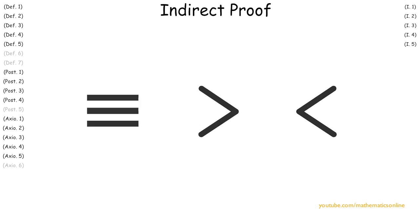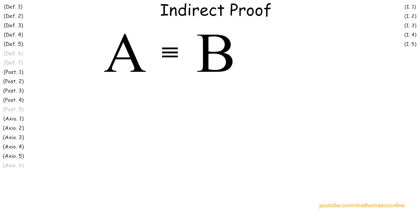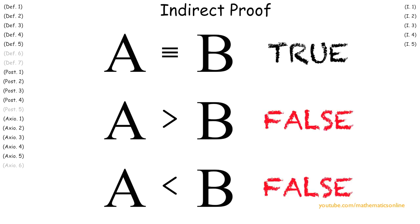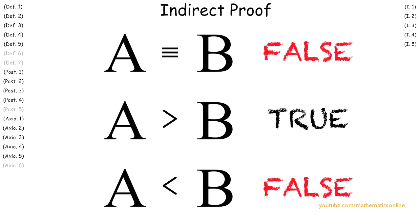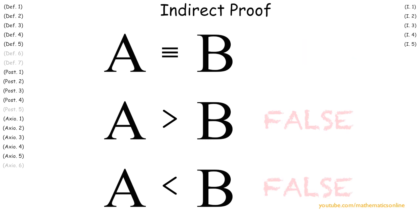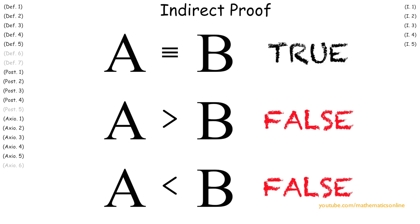Suppose we have the following three statements: a is congruent to b, a is greater than b, and a is less than b. It is very important to notice that when we consider all three statements at the same time, one can be true and the other two must be false. With this fact in mind, if two statements are false, then the remaining statement must be true. In Euclid's Elements, this is what an indirect proof mainly is — we prove two statements false so that the remaining statement is true.